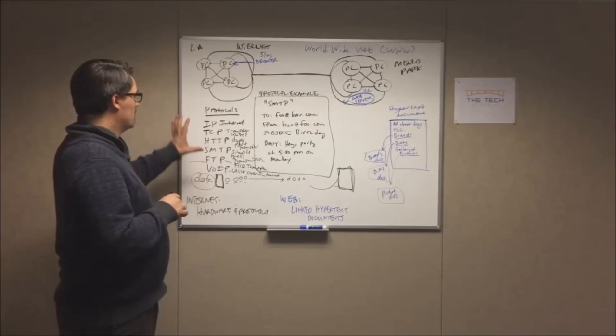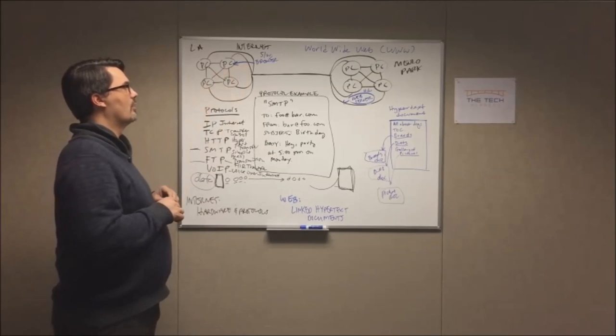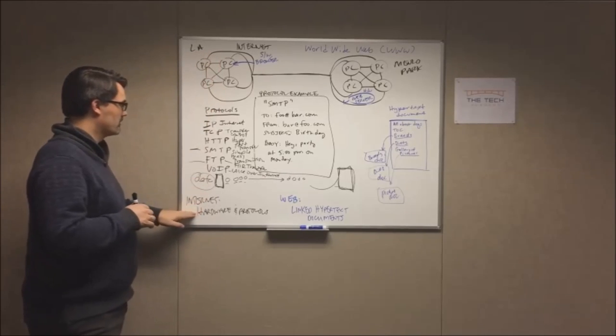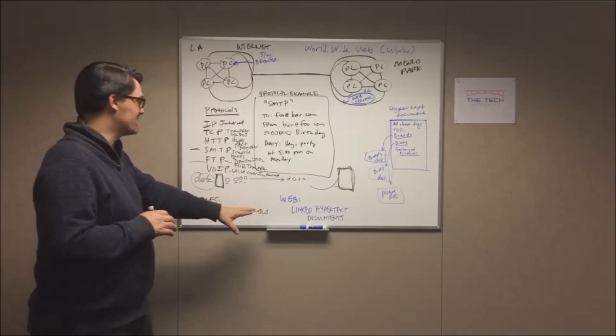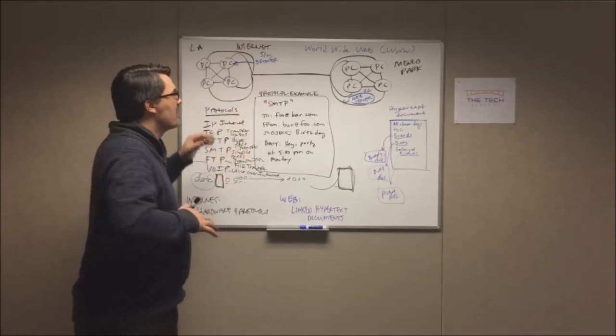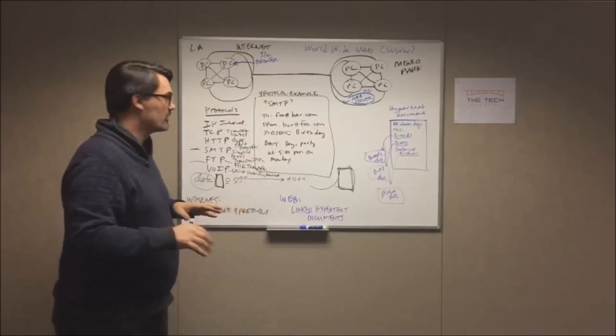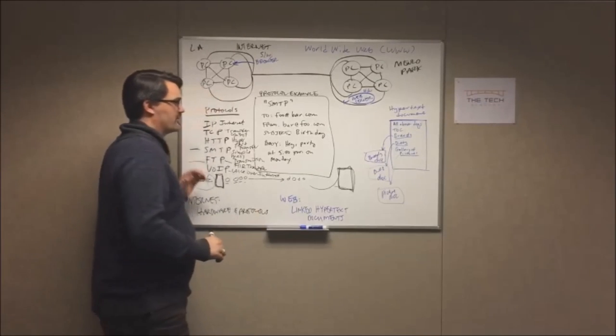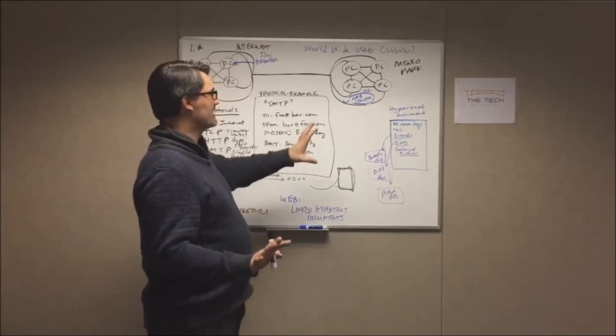So now, onto the web and what the difference is. Well, if the Internet is the physical hardware and the protocols, the agreements about sending data over it, the web is one thing that can be sent over those. What it specifically is, is linked up hypertext documents. Now, you've covered hypertext, here's a bit of an example. Here's an example hypertext document, it's called All About Dogs.